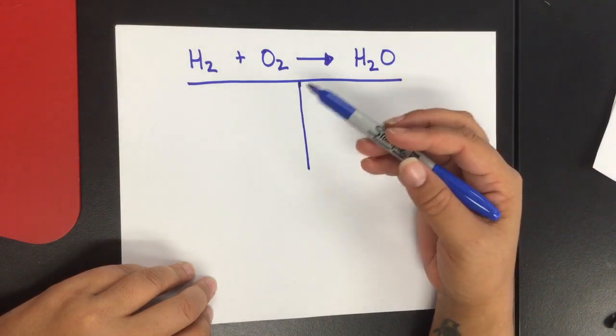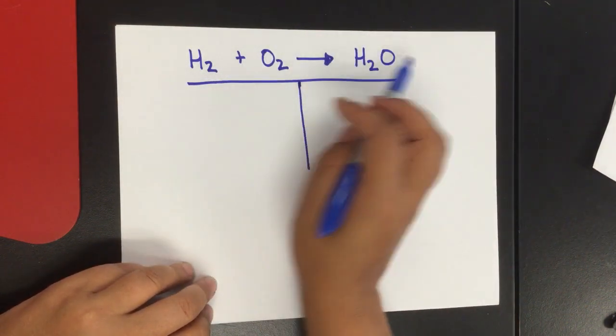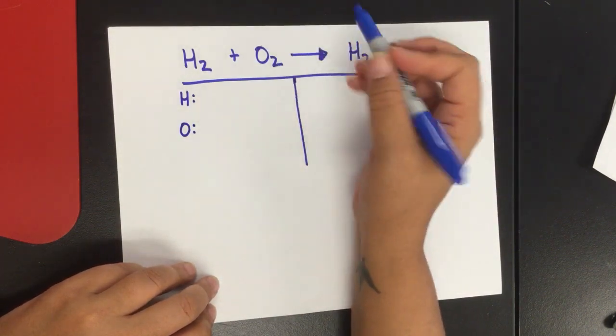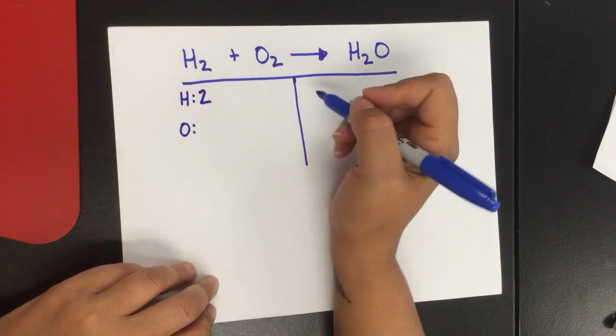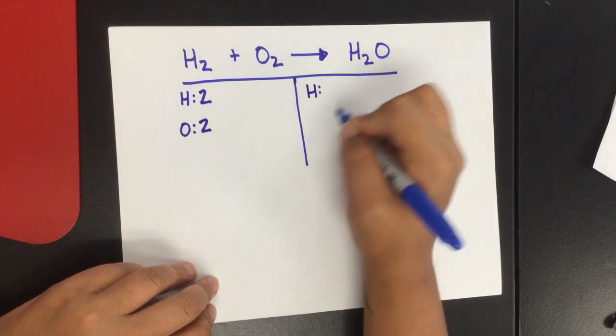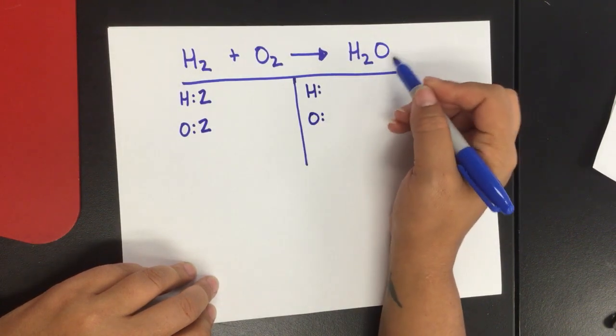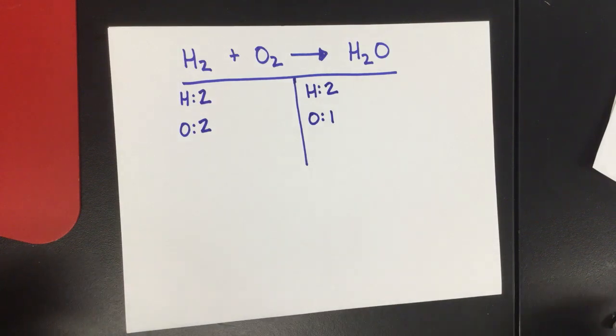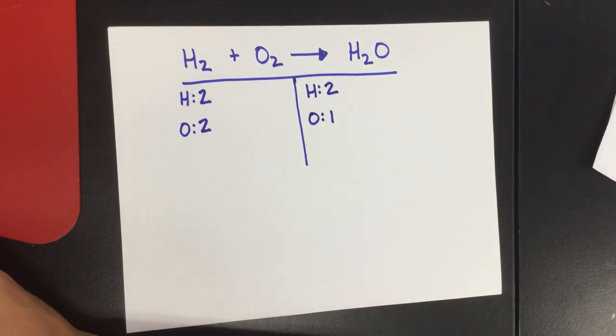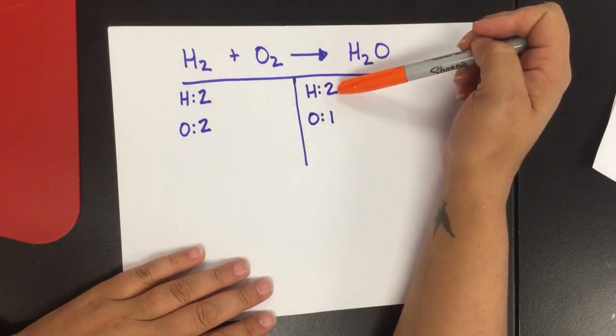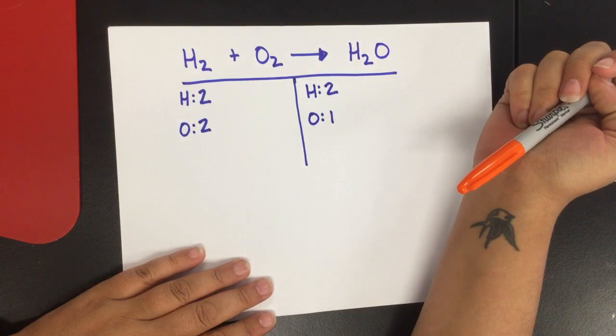So step one, complete. Step two is to actually count how many atoms I have on both my reactant side and my product side. So in this case, I want to pay attention to individual atoms, not the compounds, but the atom. So I have two hydrogen because of the subscript two, and I have two oxygen on my reactant side. On my product side, even though it's in one individual compound, I still have my two atoms. I have two hydrogen, one oxygen. And this is why we spent so much time on counting atoms inside of molecules, so that we would have that skill and understand the subscripts so we'd be able to do our balancing.